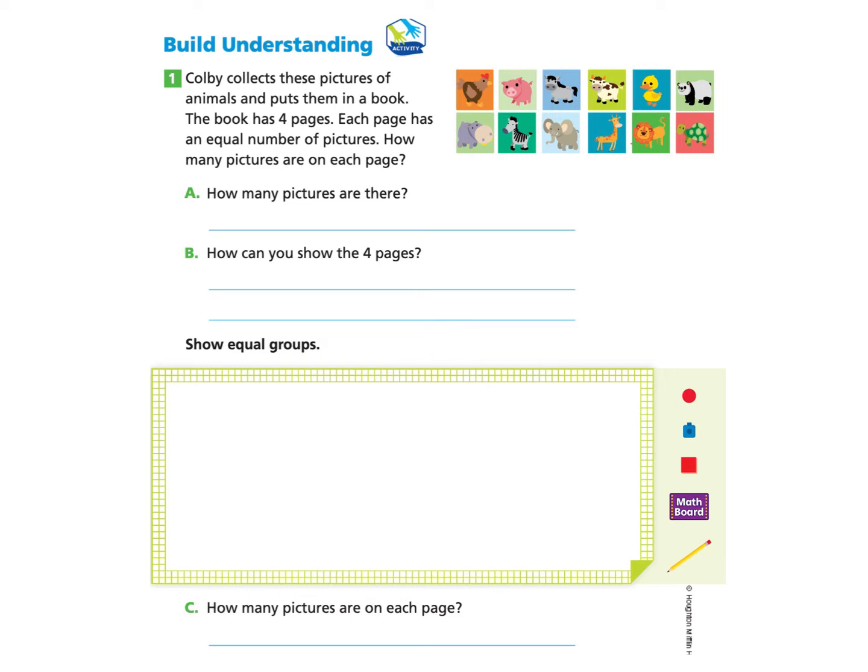We will start under build understanding. Part one. Colby collects these pictures of animals and puts them in a book. The book has four pages. Each page has an equal number of pictures. How many pictures are on each page?